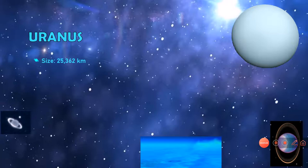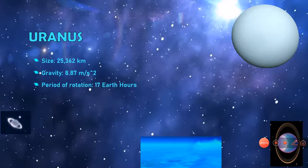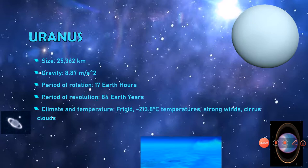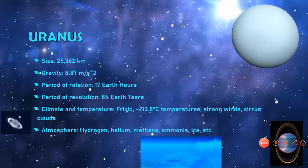Uranus. Its size is 25,362 kilometers. Uranus's gravity is 8.87 meters per second squared. Its period of rotation is 17 Earth hours. Its period of revolution, on the other hand, is 84 Earth years. Uranus's climate and temperature: it's very frigid with minus 213 degrees Celsius temperature, strong winds and serious clouds in its atmosphere, which contains hydrogen, helium, methane, ammonia, ice, etc. Uranus is literally pronounced as your anus.